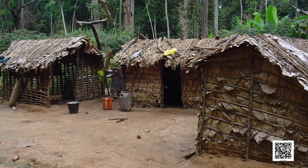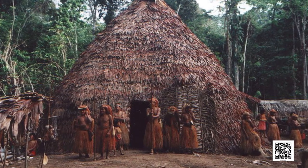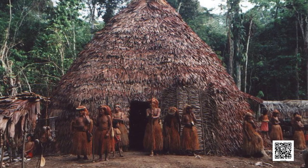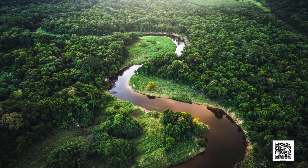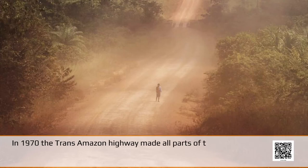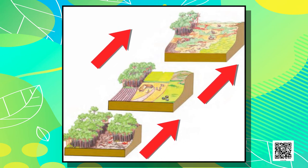The rainforests provide a lot of wood for houses. Some families live in thatched houses shaped like beehives. There are other large apartment-like houses called maloka with a steeply slanting roof. Life of the people of the Amazon Basin is slowly changing. In the older days, the heart of the forest could be reached only by navigating the river. In 1970, the Trans-Amazon Highway made all parts of the rainforest accessible. Aircrafts and helicopters are also used for reaching various places. The indigenous population was pushed out and forced to settle in new areas. Developmental activities are leading to the gradual destruction of the biologically diverse rainforests, and a large area of the rainforest has been disappearing annually.